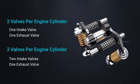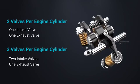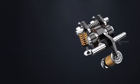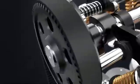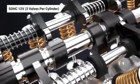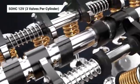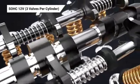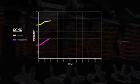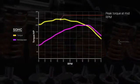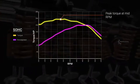SOHC design typically allows a two or three valves per cylinder configuration — usually one valve for intake and one for exhaust, or two valves for intake and one for exhaust. However, current industrial competencies allow production of a four valves per cylinder configuration using SOHC. Due to the reduced components, the design complexity and manufacturing cost is comparatively low. Since the mass of the valve train is lesser, SOHC engines tend to produce more torque towards low to mid RPM and provide improved fuel efficiency.